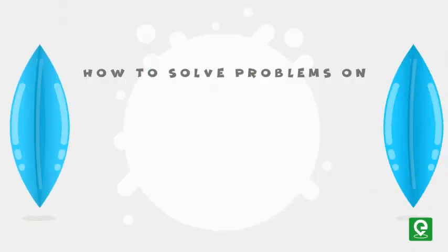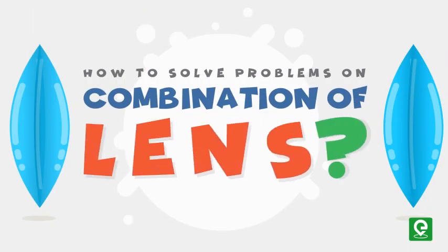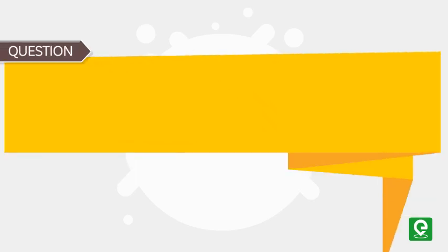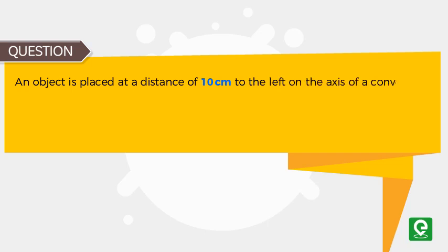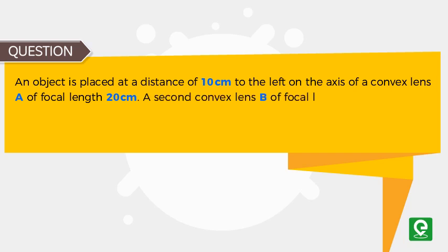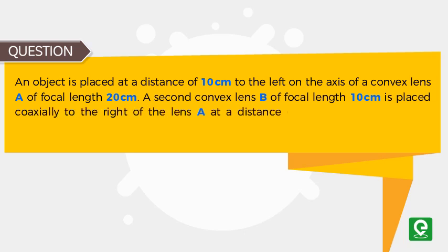How to solve problems on combination of lens. Question: An object is placed at a distance of 10 centimeters to the left on the axis of a convex lens A of focal length 20 centimeters. A second convex lens B of focal length 10 centimeters is placed coaxially to the right of the lens A at a distance of 10 centimeters from A.